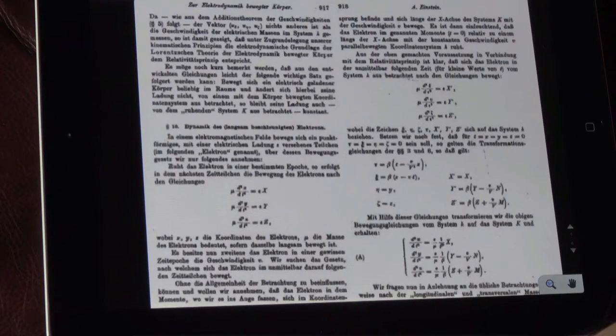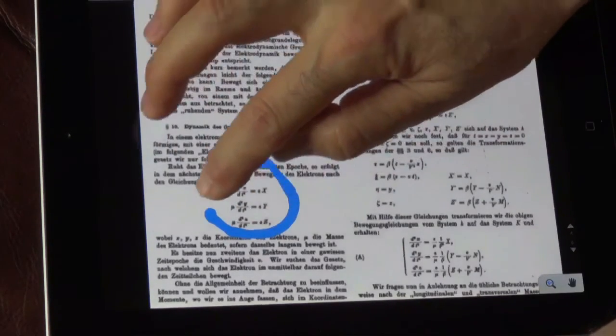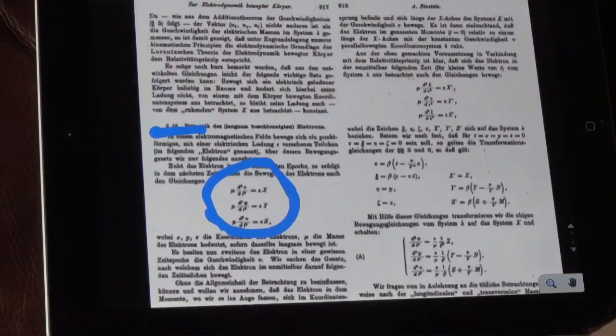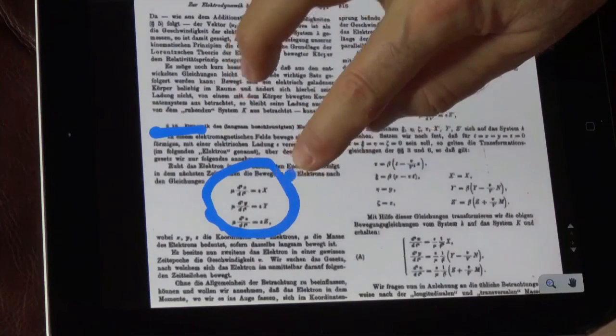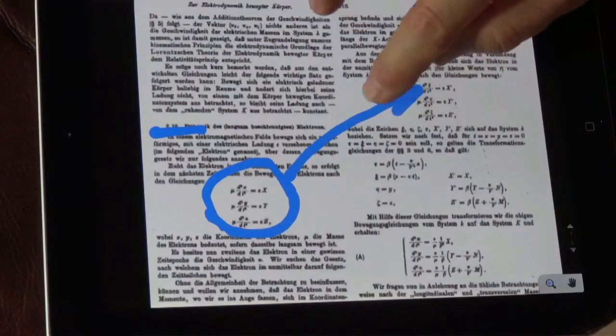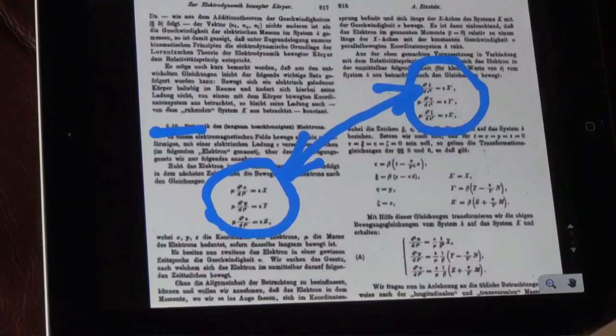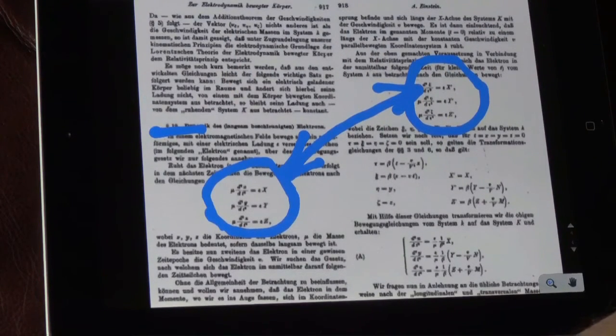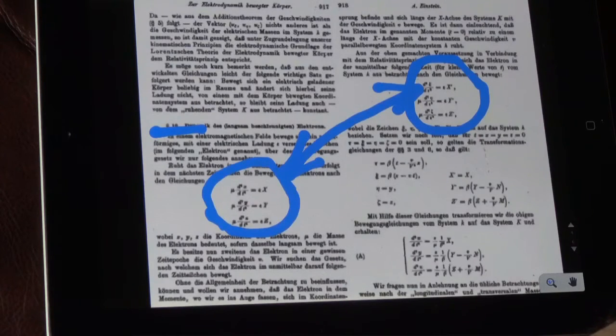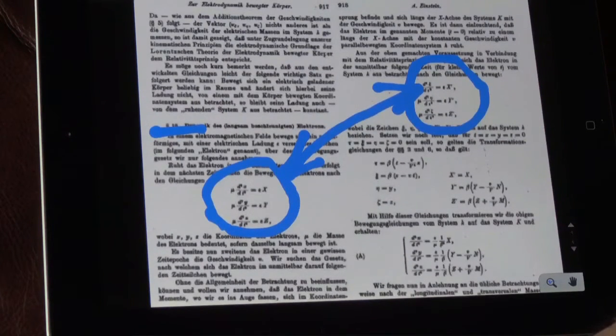Therefore it would have been enough for Einstein to apply just the first postulate to the first set of equations in part 10 of his 1905 paper to represent them in the moving system and vice-versa. However then, a purely trivial solution would have been the result and there would have been no discovery at all, as is really the case.